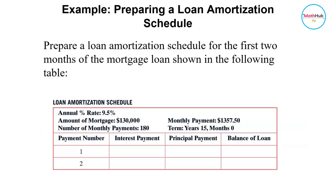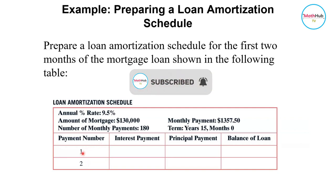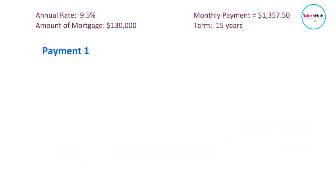Now let's see how we could make a loan amortization schedule for the first two months on the mortgage loan. In the following table, we want to compute the amortization schedule for the first two months. Let's begin with payment number one.